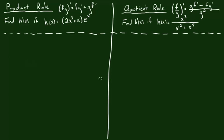Hello all, we're going to do a quick product rule and quotient rule problem. For the product rule, the function I'm going to be using is 2x cubed plus x, all times e to the x. For the quotient rule, we're going to be using x cubed all divided by x squared plus x to the fifth. Let's go ahead and start with the product rule.